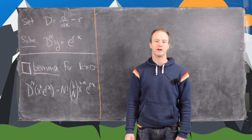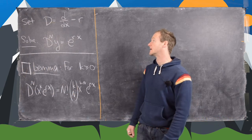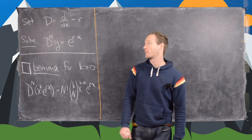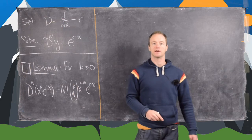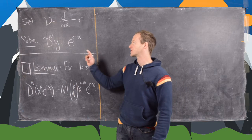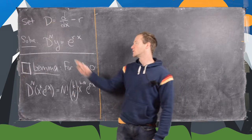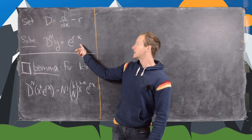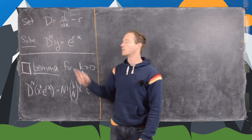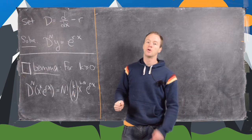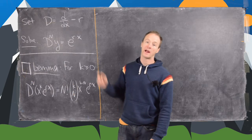In this video we're going to look at a differential equation which was commented about in a previous video. I've generalized it a little bit but the essence is still the same. We want to consider the following operator: we'll call it big D, and it will be the derivative with respect to x minus the constant r. Our goal is to solve the differential equation D to the nth power on y equals e to the rx. Notice that e to the rx is in the null space of this operator, so e to the rx will be a homogeneous solution to this differential equation — which adds to the interest here because that's also what we have on the right hand side.